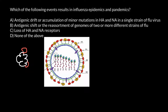Two of these proteins are surface proteins: one is neuraminidase, shown in yellow, and the other is hemagglutinin, shown in red. All strains of the virus — whether A, B, or C — are named in the format H-blank N-blank. For example, it can be H1N1, H2N1, H2N2, and so on. Many different combinations are possible.